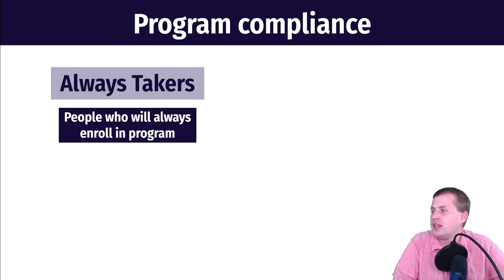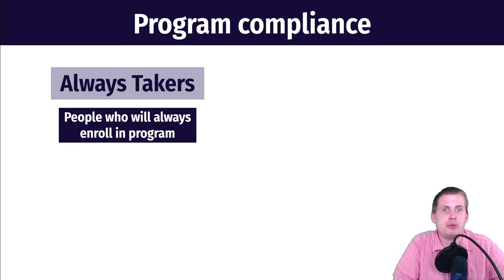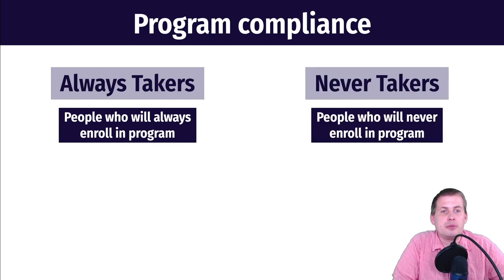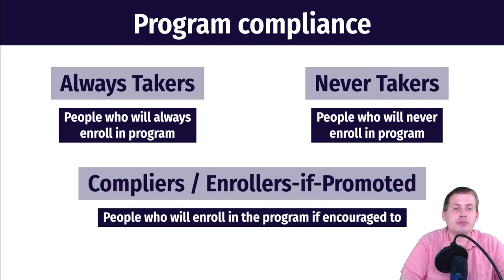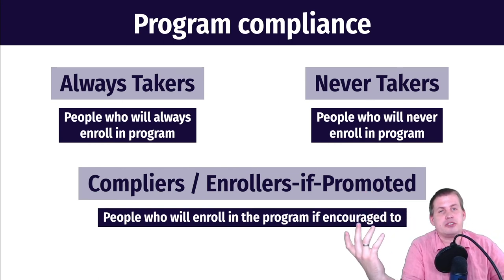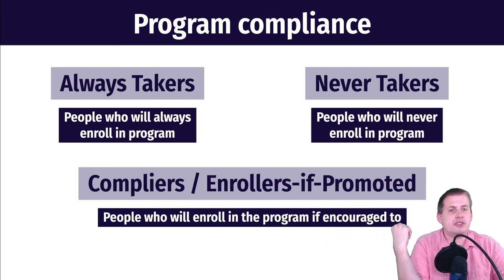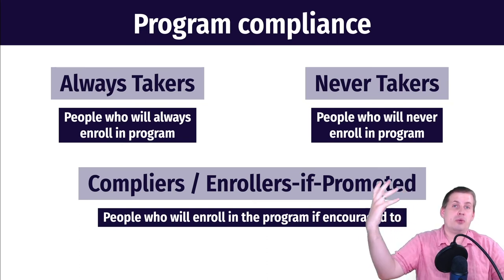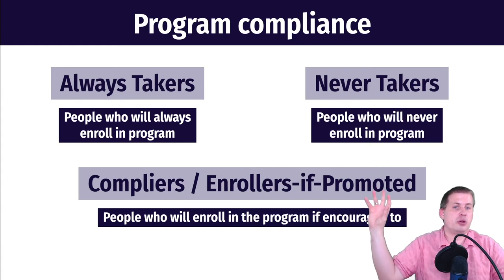This also deals with compliance, which is why the instrument approach is cool. When you do this type of randomized encouragement out in the world, there will be always takers — people who will always register to vote regardless of whether you knock on their door. There will be never takers — people who will never register no matter what. And then there are the compliers: enrollers if promoted. If you knock on their door they will register; if you don't, they won't. What we care about — what we can find using random promotion — is the effect on these compliers.